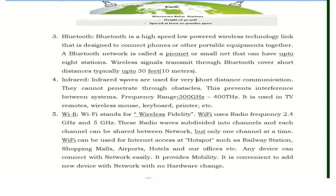Next is infrared. Infrared waves are used for very short distance communication. They cannot penetrate through obstacles, which prevents interference between systems. The frequency range is 300 GHz to 400 GHz. Infrared is used in TV remotes, wireless mice, keyboards, printers, and other wireless devices in the house.